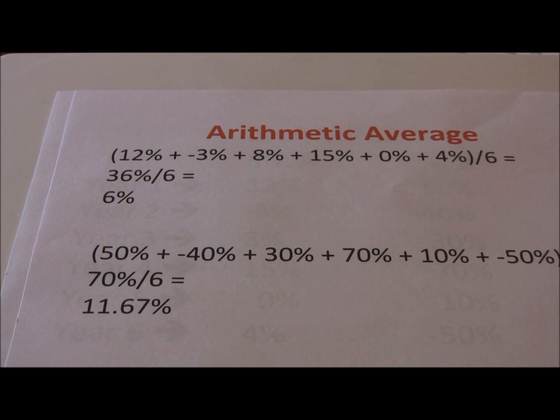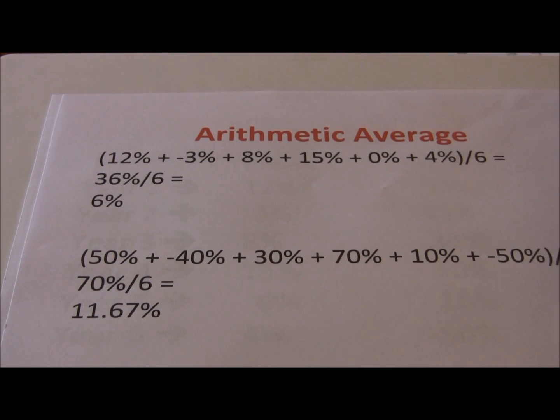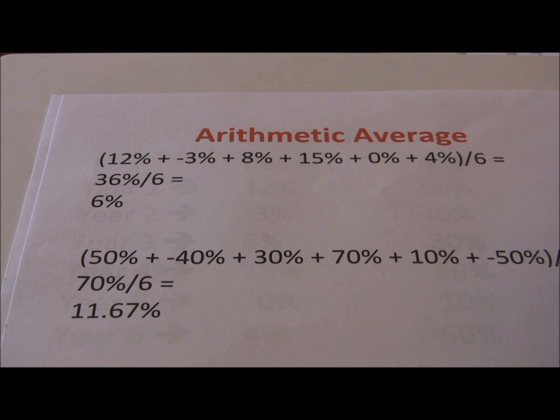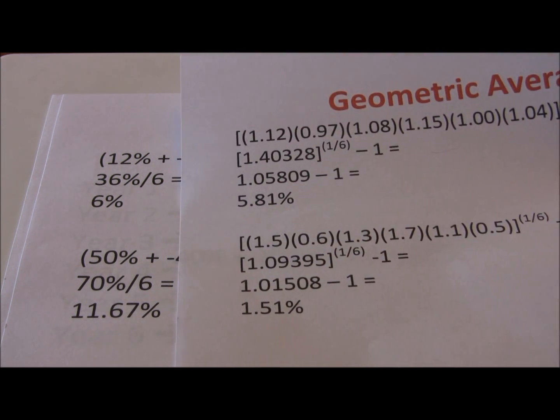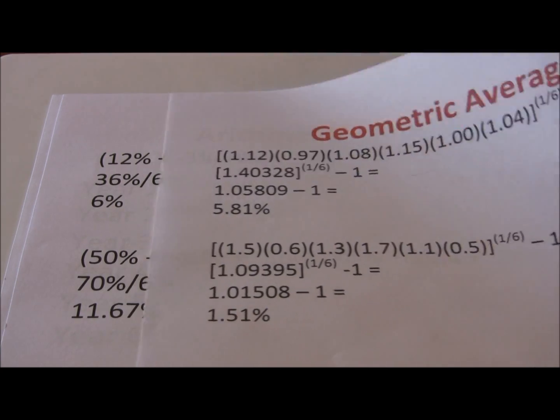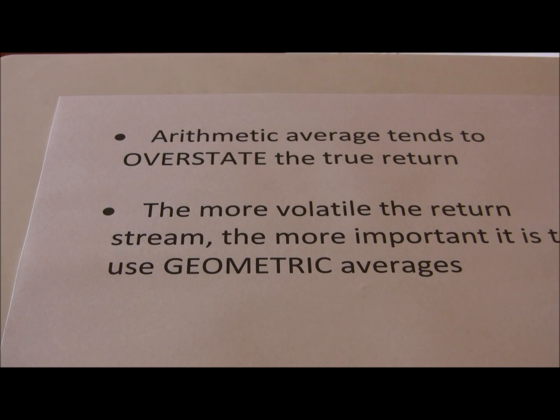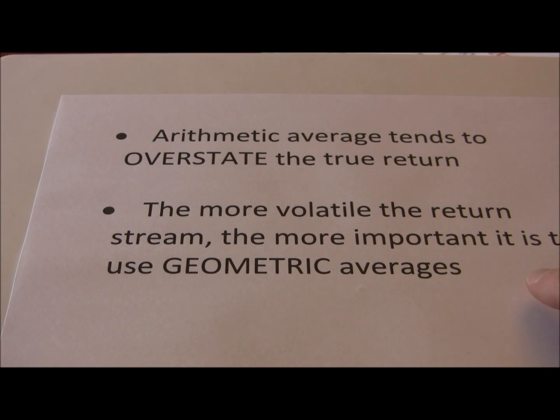But investment B, which was much more volatile with high returns and very low returns, now we see a big difference. Investment B showed an 11.67% arithmetic return and only 1.51% geometric return. So the more volatile the investment stream, the more important it is to use geometric averages.